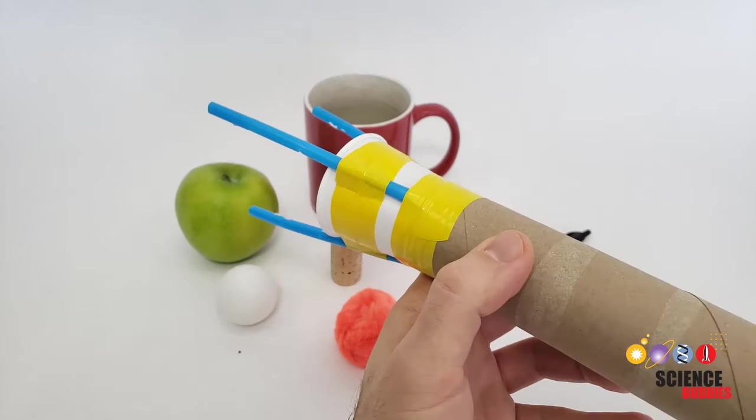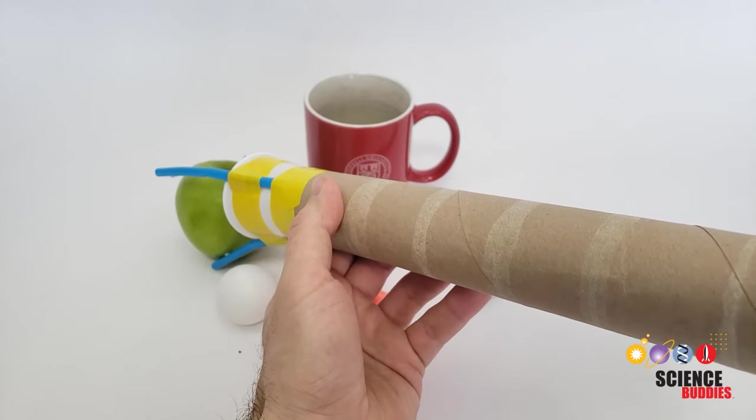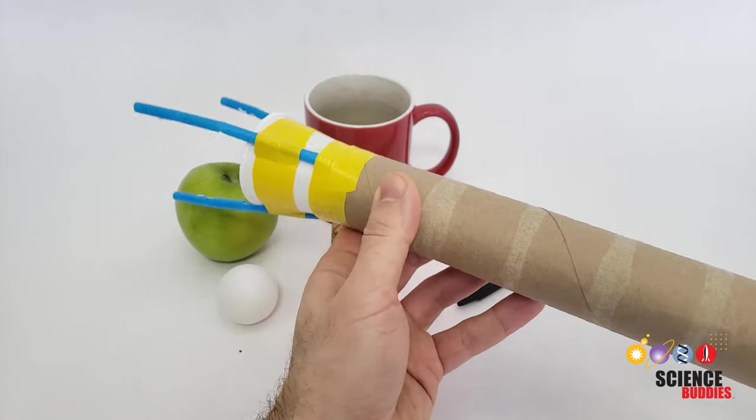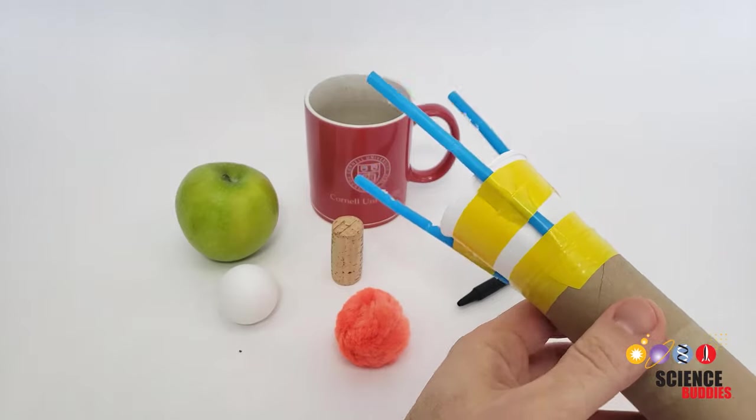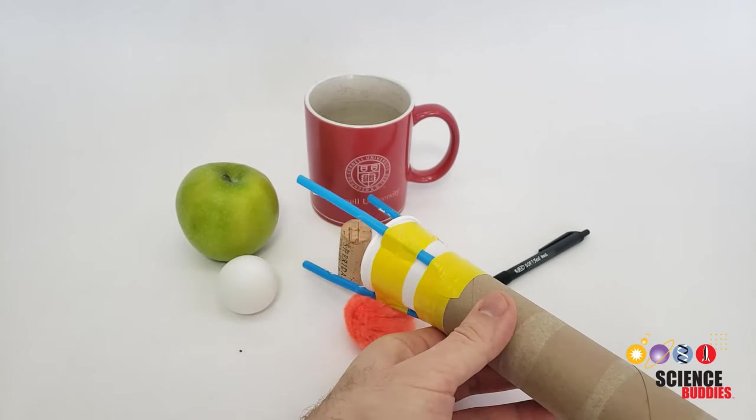In this video, I'll show you how to build a simple robotic hand at home. However, the hand I'll show you how to build isn't that strong, so you probably won't be picking up any apples or coffee mugs. You'll want to stick with lightweight objects like pom-poms, corks, or ping-pong balls.